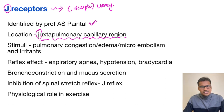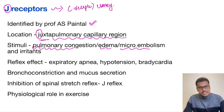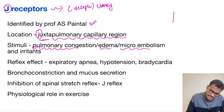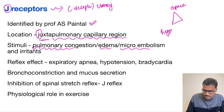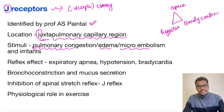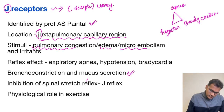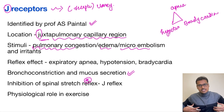The stimuli for J receptors include pulmonary congestion, edema, micro-embolism, or any other irritants. When activated, they cause a classical triad: expiratory apnea, hypotension, and bradycardia. They also cause bronchoconstriction, excessive mucous secretion, and inhibition of the spinal stretch reflex, affecting the muscles of the chest wall.